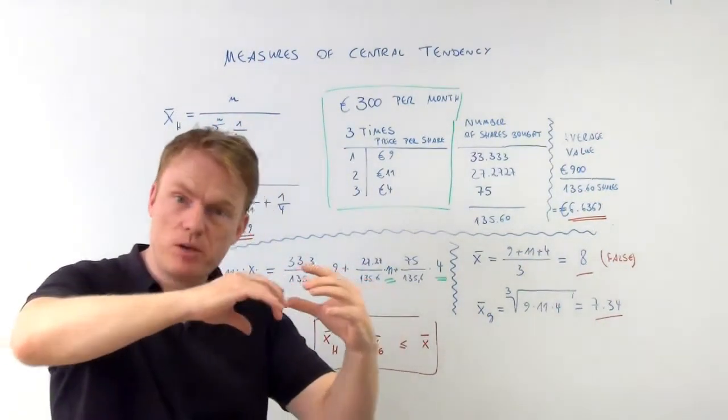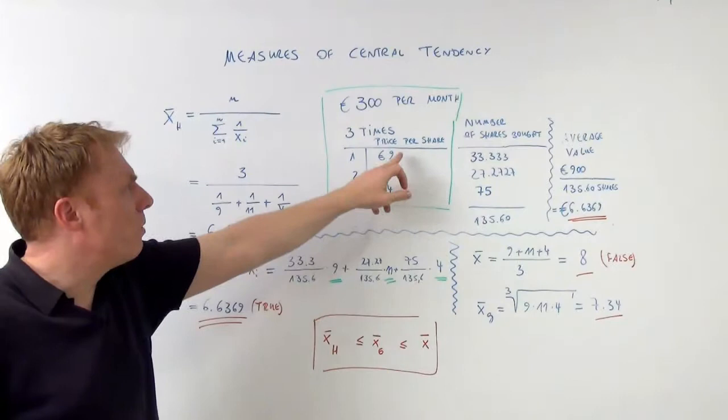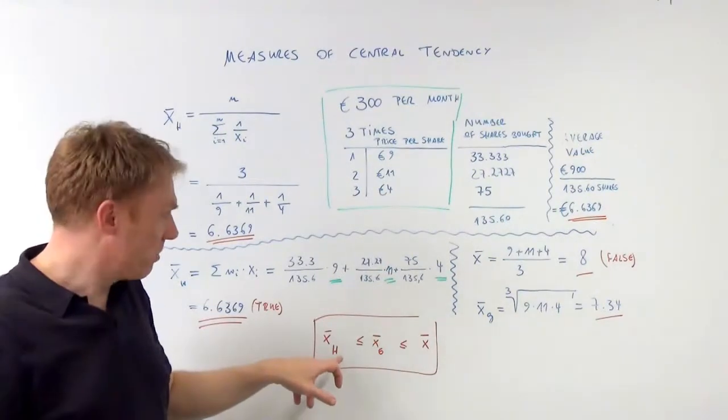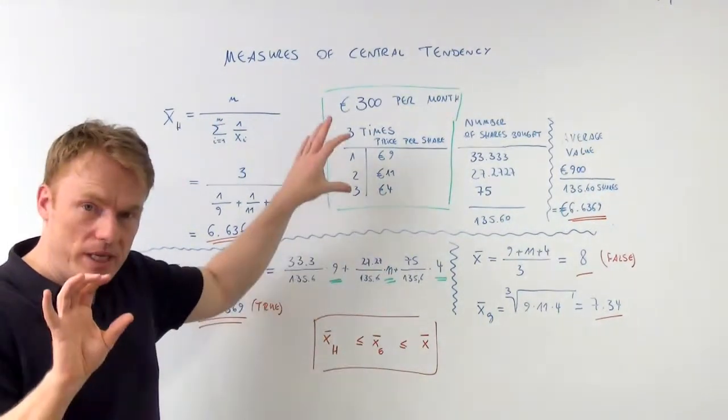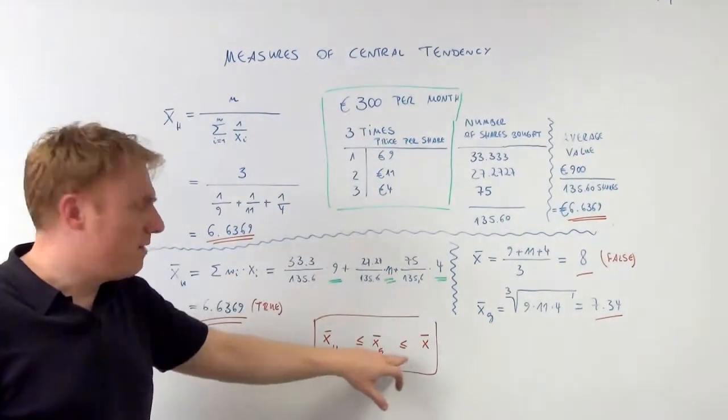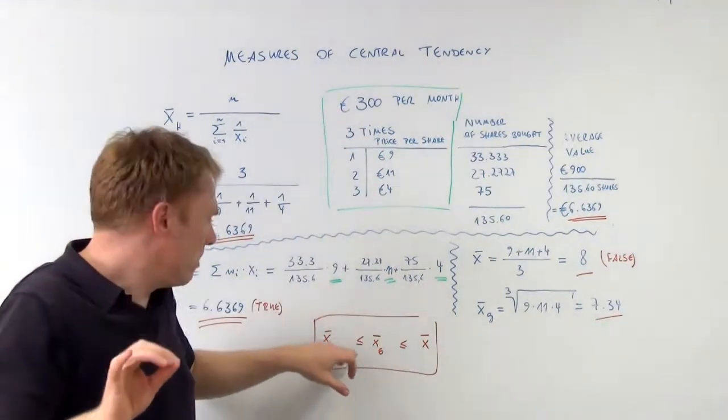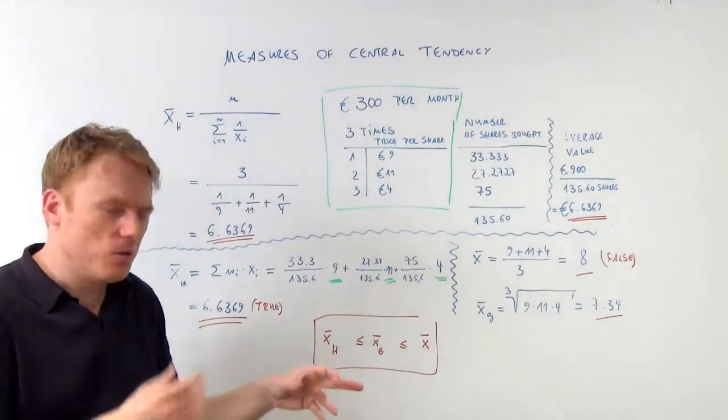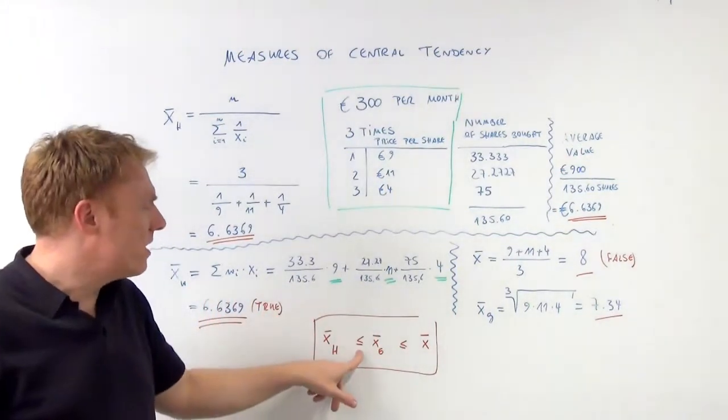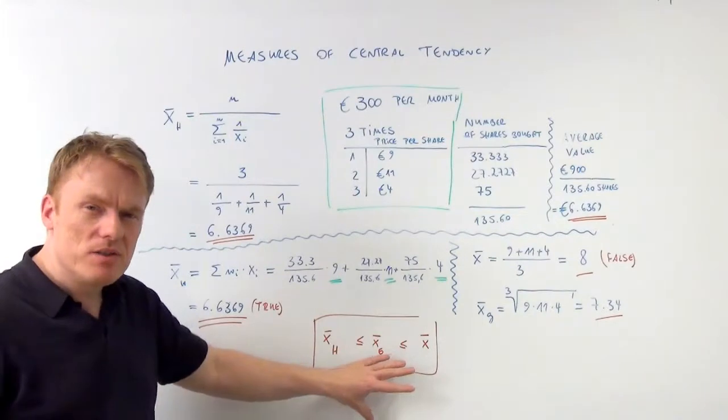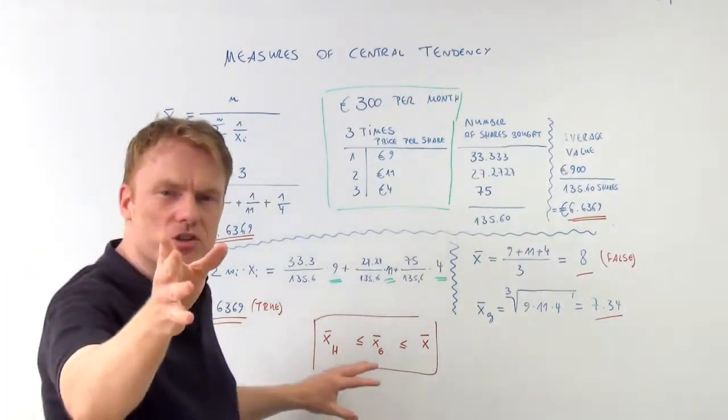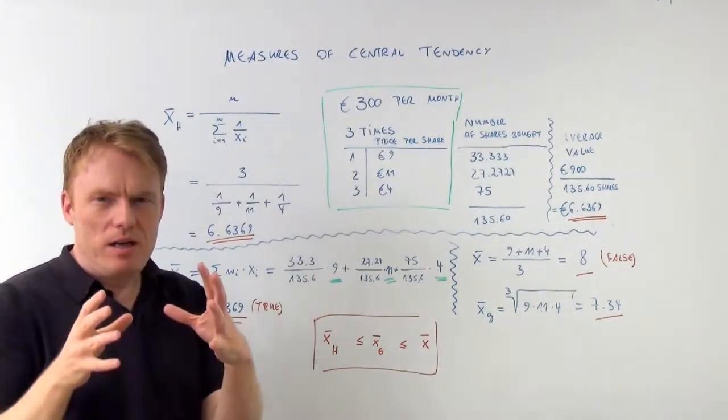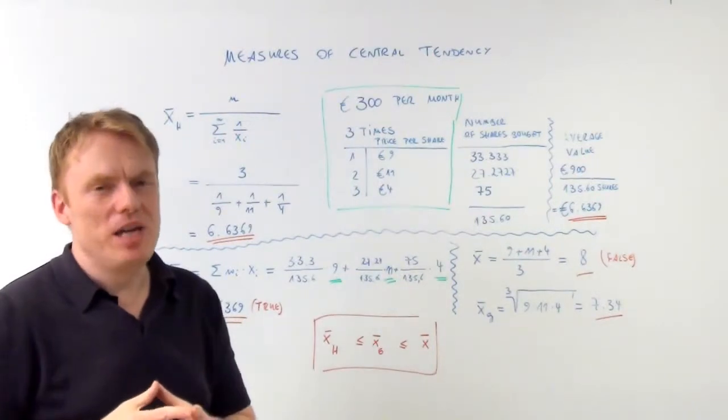If they are all the same, it is equal. Like if we only had 9 euros, 9 euros, 9 euros, it would all be 9 euros here and here and here. So if they are all equal, if the prices were all equal, we'd have the equal to sign. If they are unequal, we have the strictly inferior sign. So strictly inferior or equal gives us that sign and this one. So keep that in mind. This is the relationship between the harmonic mean, the geometric mean and the arithmetic mean and this is very important. Thanks for watching. Thank you for listening.